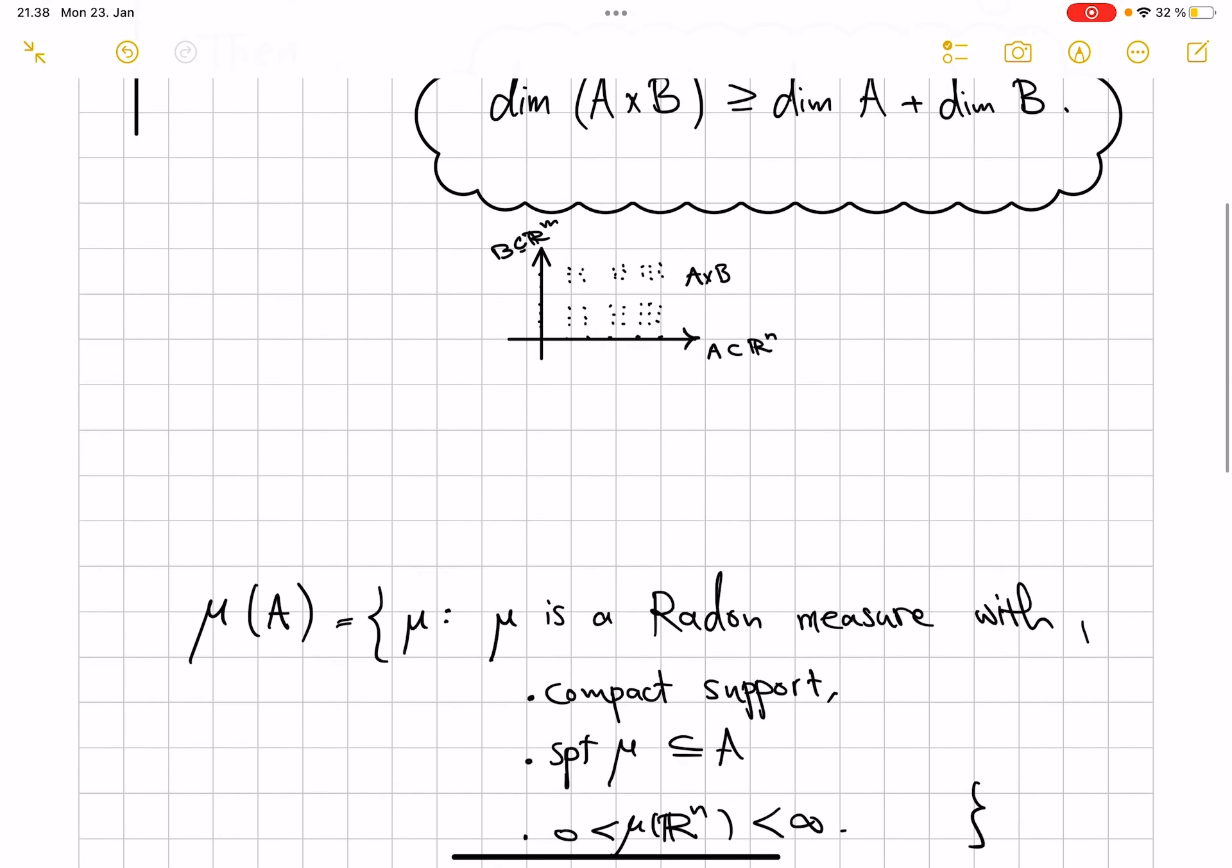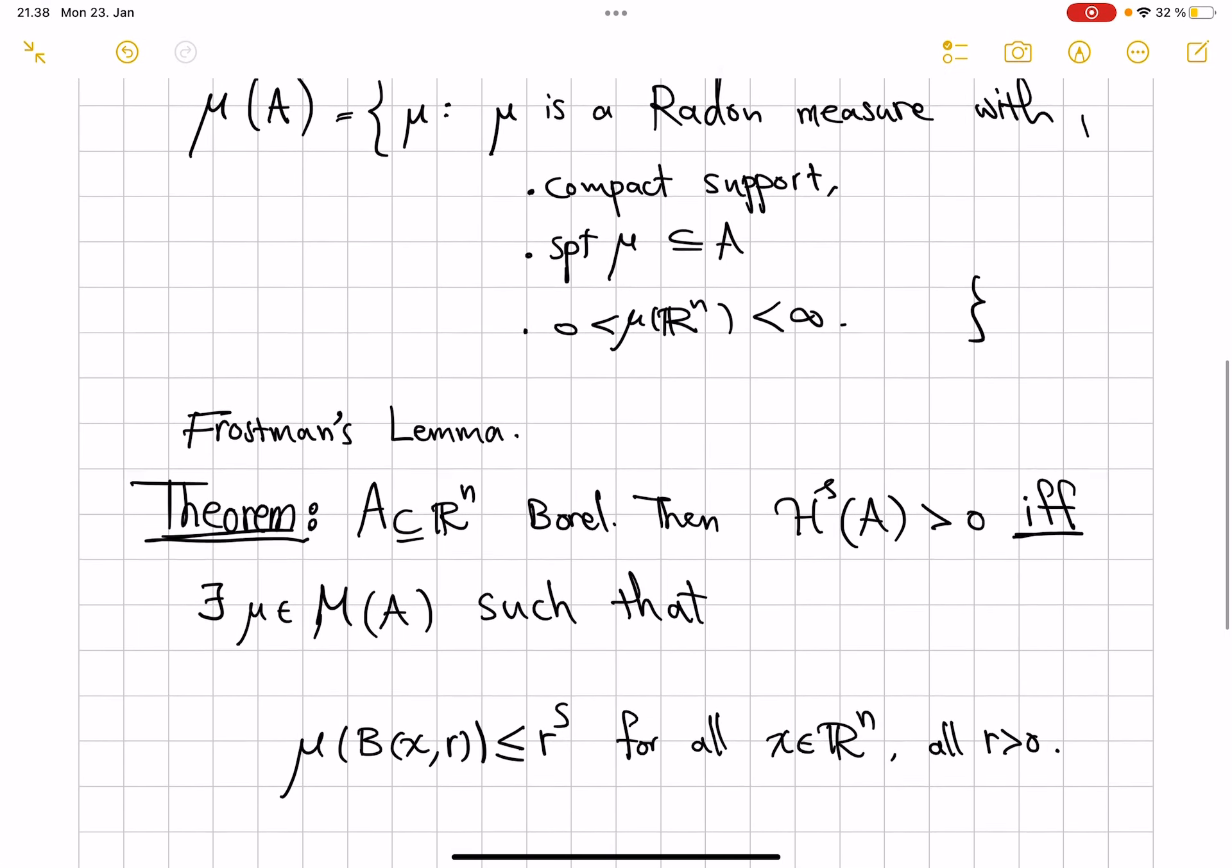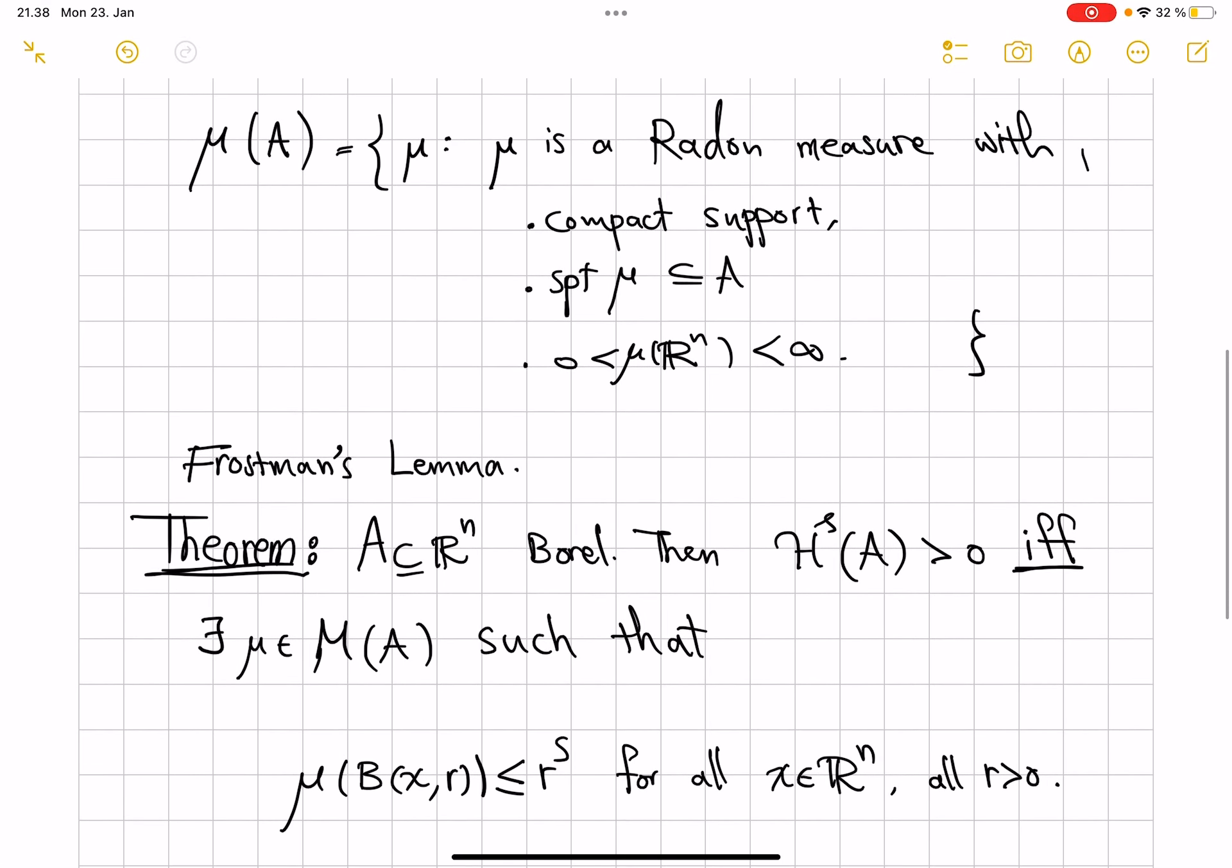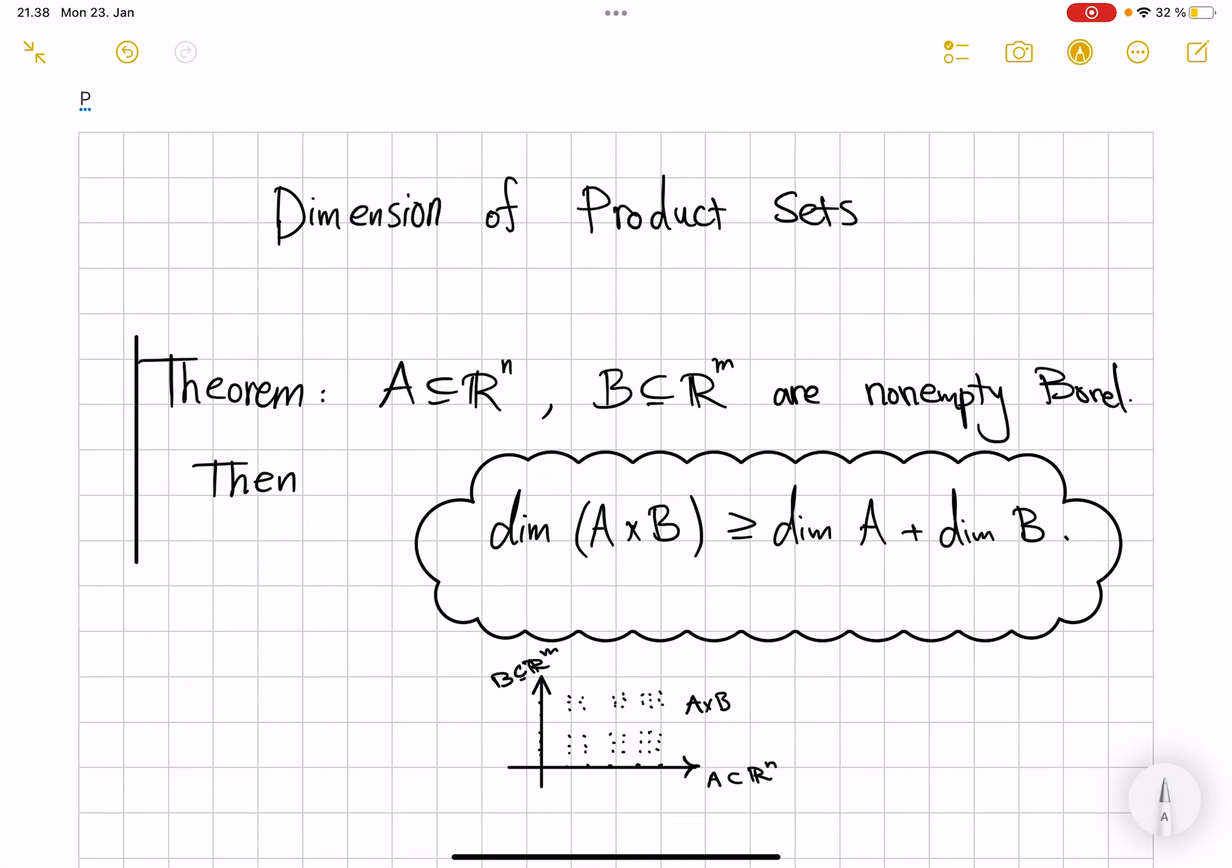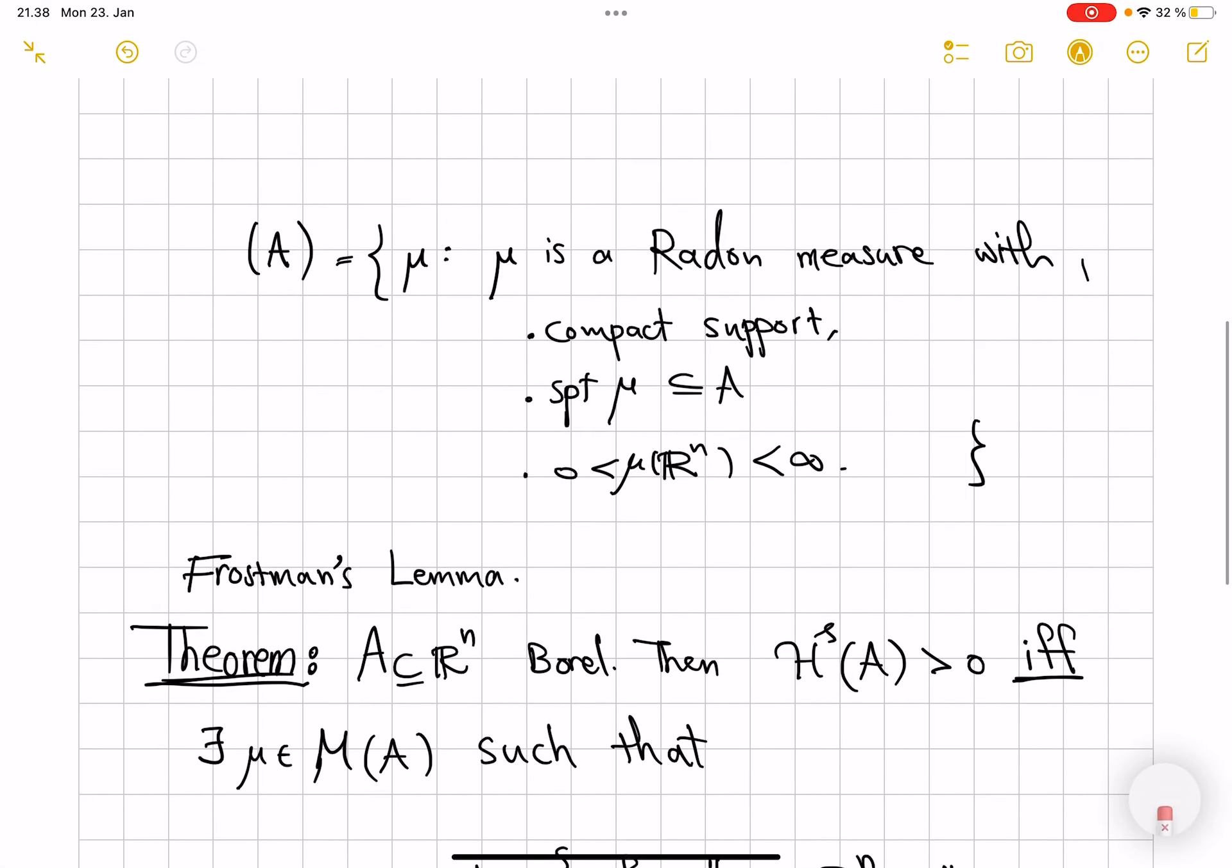So, what is this Frostman's lemma all about? We have to first just fix this notation, with the typo removed. The set of all Radon measures on R^n that have compact support, and that support is contained in the set A. And also, the total measure of the space is positive and finite. So we call this space M(A).